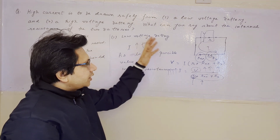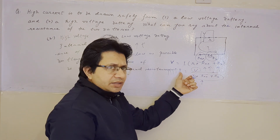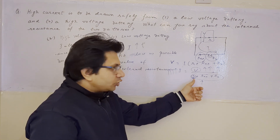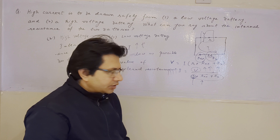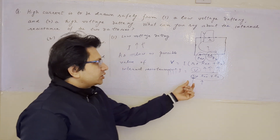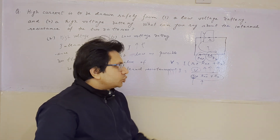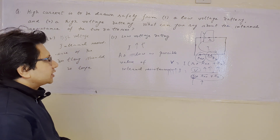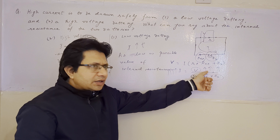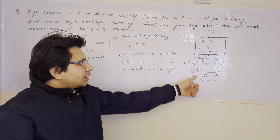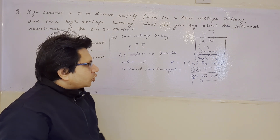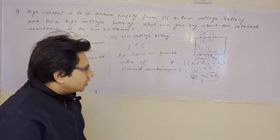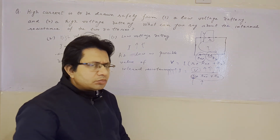If the battery voltage is already low, the current will decrease. To keep the current high, we decrease the internal resistance to decrease the denominator. So for the first case, we choose a battery with low internal resistance. In the second case, with a high voltage battery, the numerator is already large. If the denominator is also low, the current will be very large and unsafe. So for high voltage, we keep internal resistance moderate or high to keep the current at a reasonable, safe value.